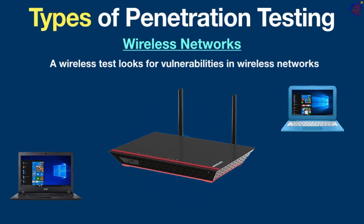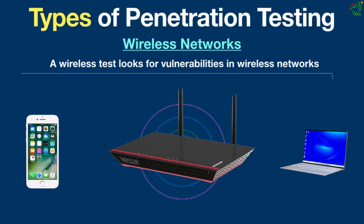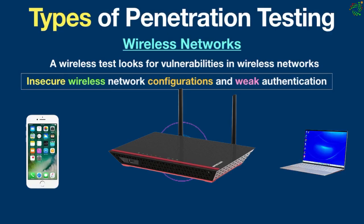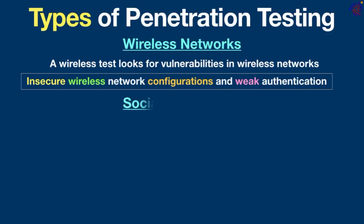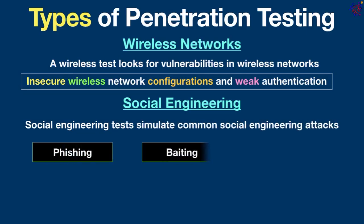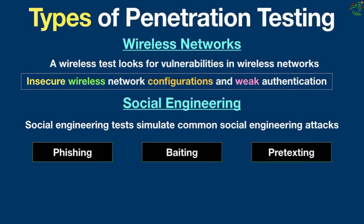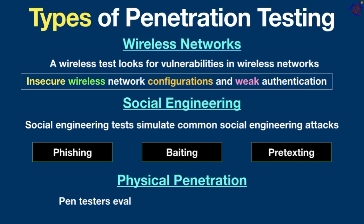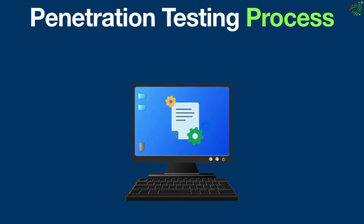Wireless network testing looks for vulnerabilities in wireless networks. A wireless pen test identifies and exploits insecure wireless network configurations and weak authentication. Vulnerable protocols and weak configurations may allow users to gain access to a wired network from outside the building. Social engineering testing simulates common social engineering attacks such as phishing, baiting, and pretexting, which aim to manipulate employees into clicking a link or taking an action that compromises the business network. Physical penetration testing evaluates the physical security of a location by attempting to gain access to buildings, data centers, and other sensitive areas.